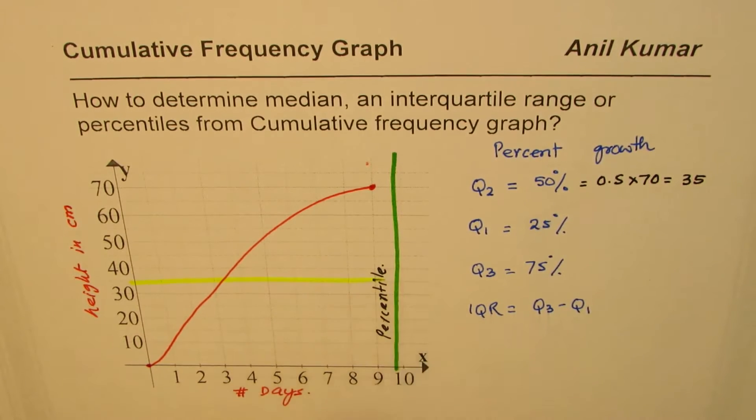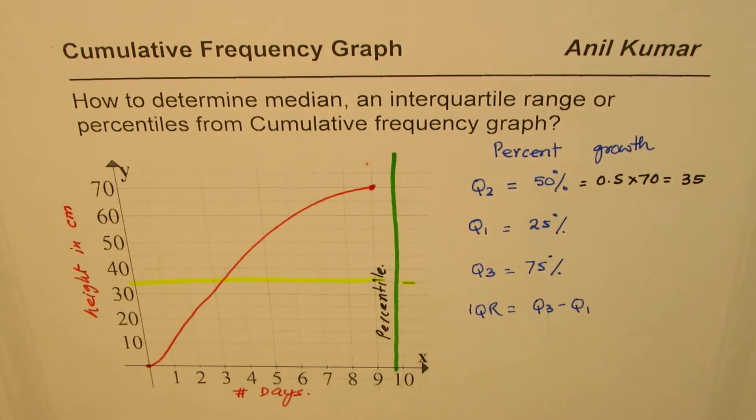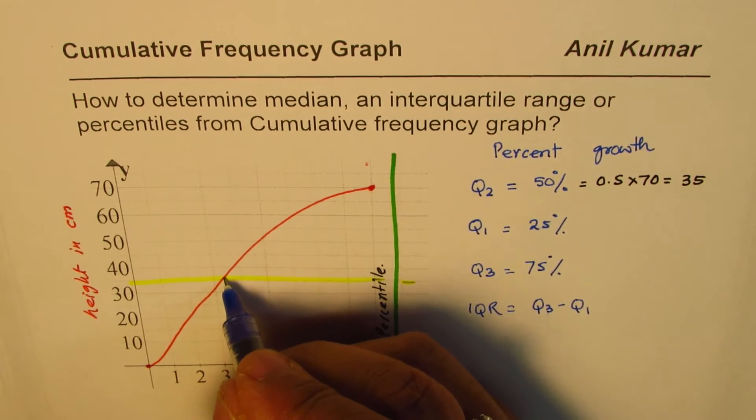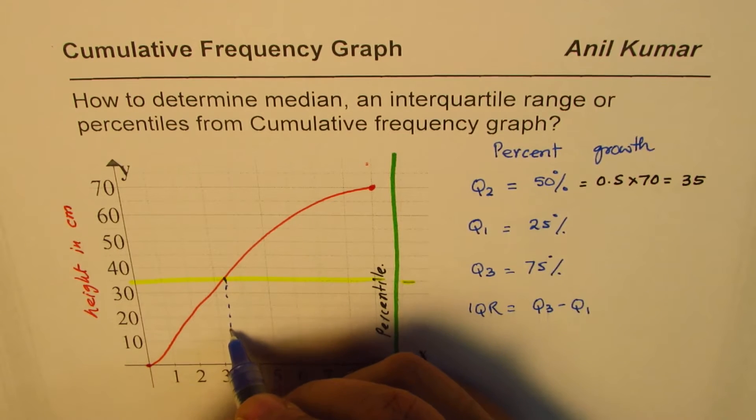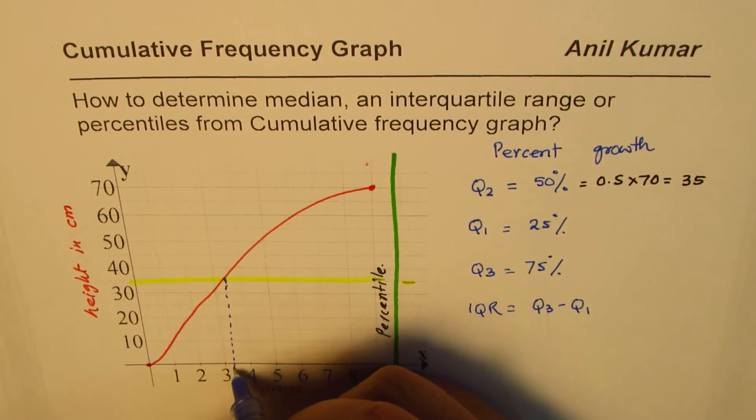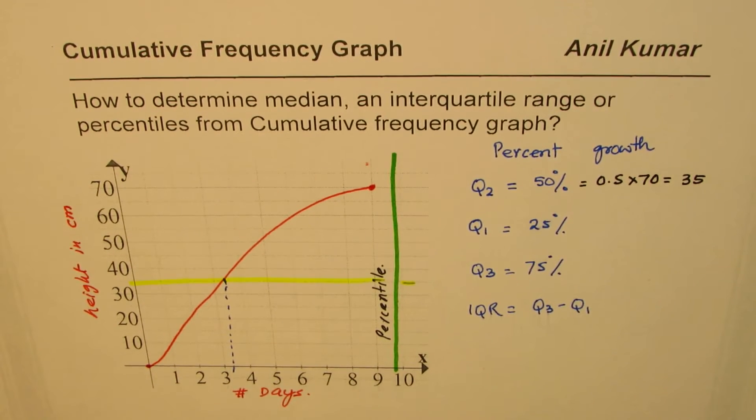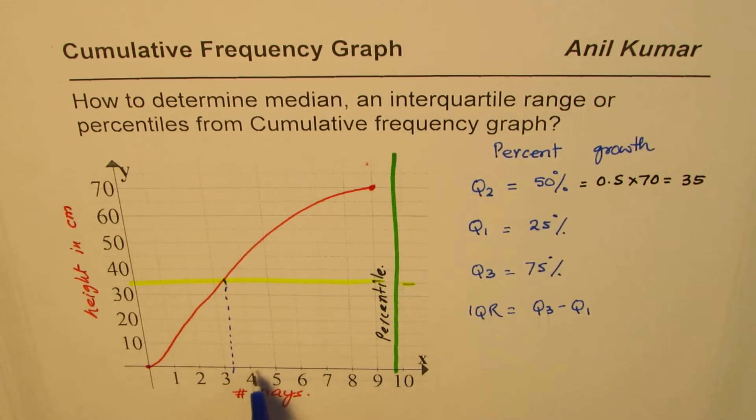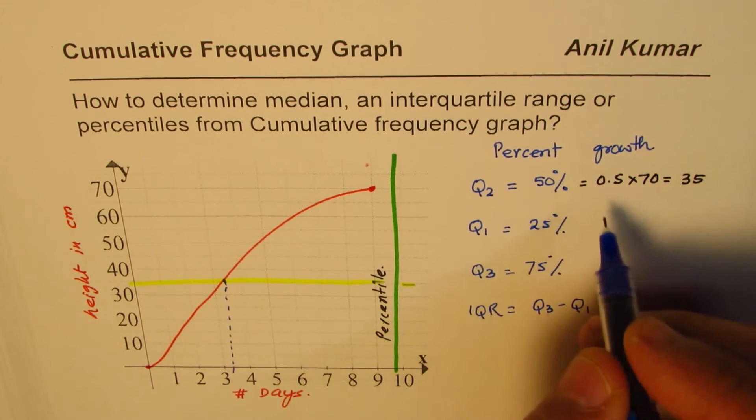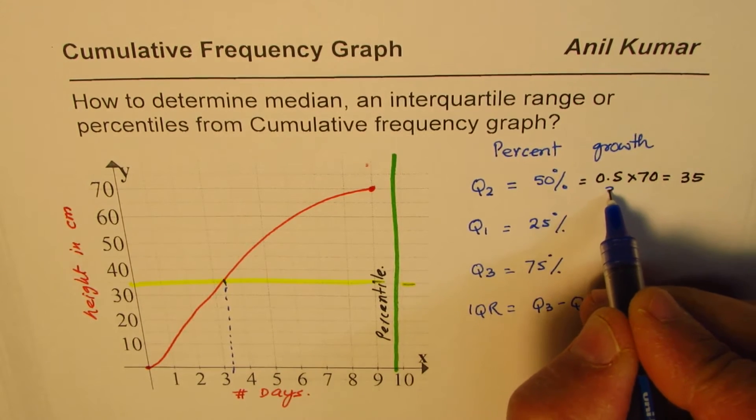This line represents the median. Wherever this line cuts the graph we can go back down here and find the value. So for us the median is slightly more than three days, and if you like you could call this as let's say 3.2 days.